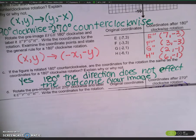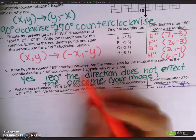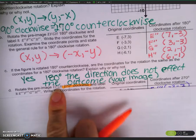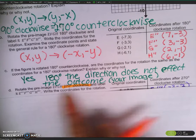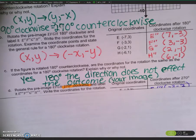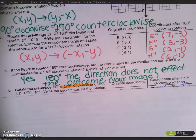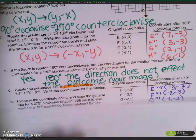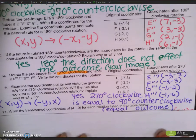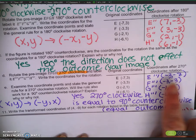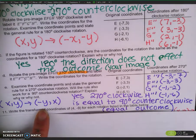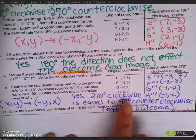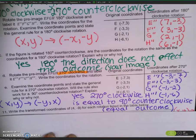We have one more rotation to look at: 270 degrees clockwise, going to E triple-prime, F triple-prime, G triple-prime, H triple-prime. Pause for one minute. Results: negative 3, negative 7; negative 3, negative 3; negative 1, negative 2; and negative 1, negative 6. The rule is X, Y gets mapped to negative Y, X. And yes, 270 degrees clockwise equals 90 degrees counterclockwise — they have the equal outcome.